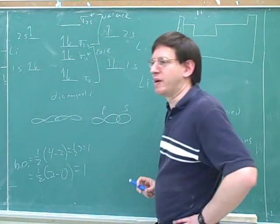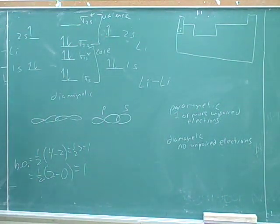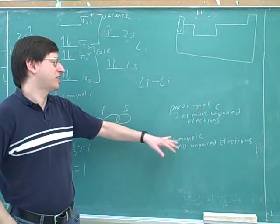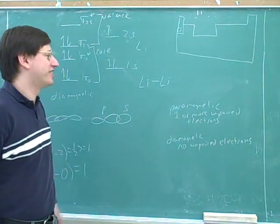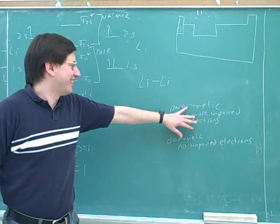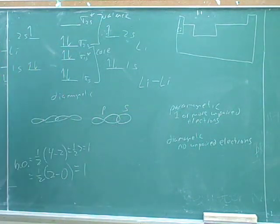So these are just definitions that we need to memorize. Unfortunately, paramagnetic kind of has the word pair in it, but it actually means unpaired. So that's an unfortunate coincidence. But if you remember that paramagnetic is the opposite of what it sounds like, then you would know that paramagnetic means one or more unpaired electrons.